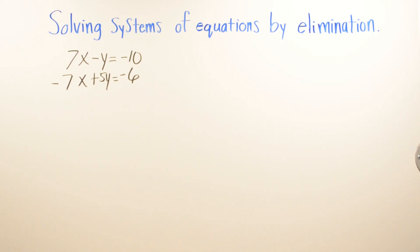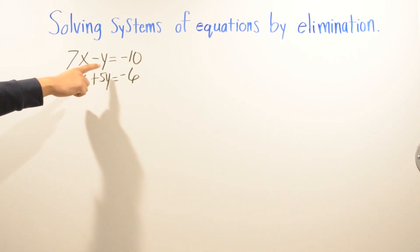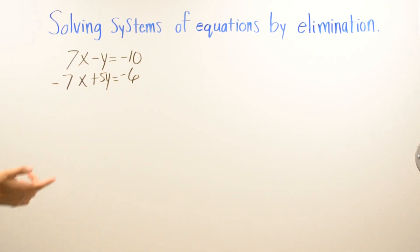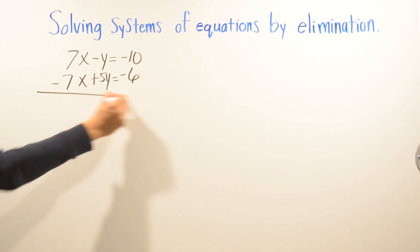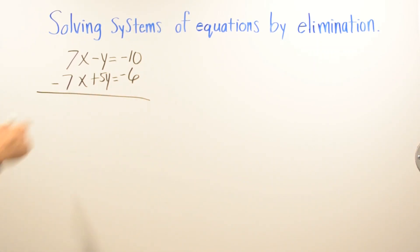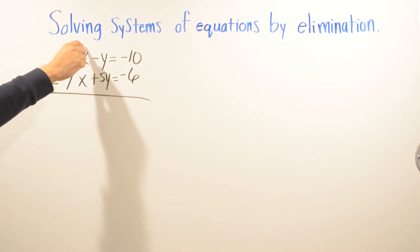In this problem our first equation is 7x minus y equals negative 10 and our second equation is negative 7x plus 5y equals negative 6. We got lucky here because we already have a positive 7x and a negative 7x, so we can automatically eliminate x just by adding the two equations.